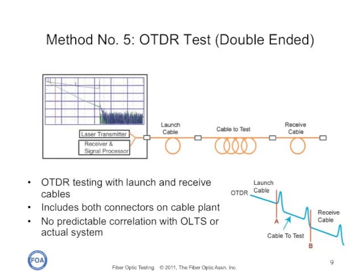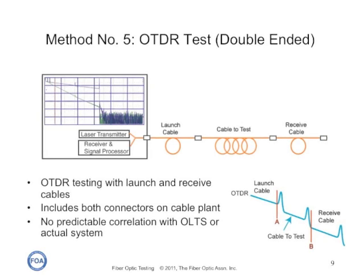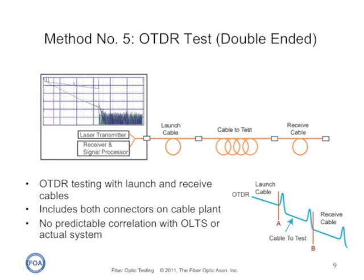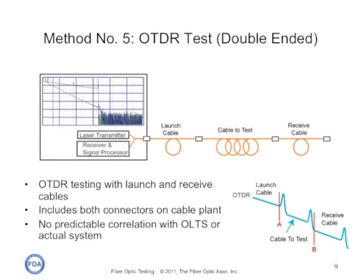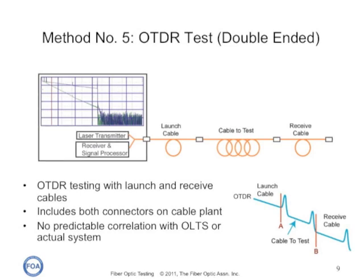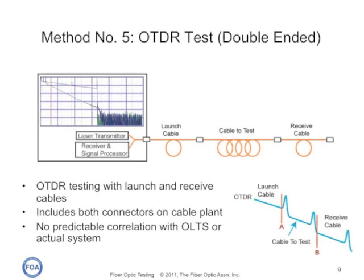The second OTDR test method adds a receive cable on the far end of the cable you want to test. Now we have the cable under test connected to both a launch cable and a receive cable. We can then measure the connection to the cable under test, the loss in the cable under test, and the far-end connection, giving us a more accurate view of what's happening in the cable plant. However, the OTDR test is a calculated test, not a direct test of loss, and the likelihood of an OTDR result agreeing with an insertion loss test is relatively small, depending on the method used and the length of the cable plant.